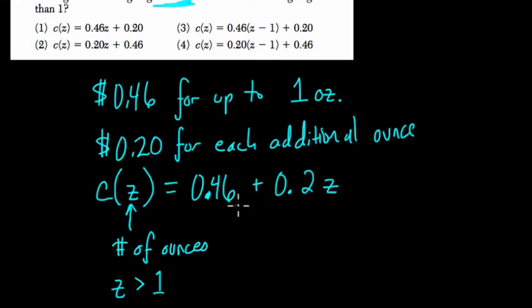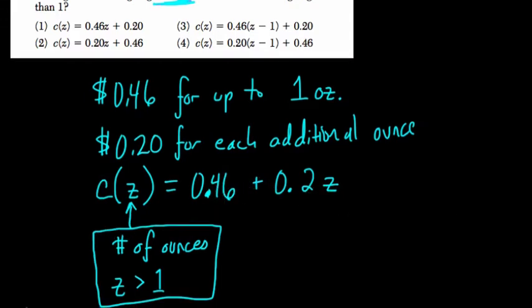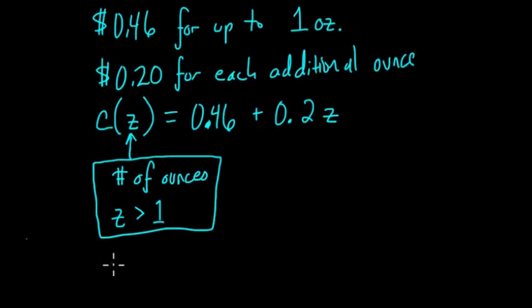Now that's partly true, except think about this restriction right here. The number of ounces for Z is greater than 1. So let's just test our formula and see if it even makes sense. So we're saying if Z is greater than 1, so it has to be an integer, it can't be like 1.5, it has to be a whole number. So 2.